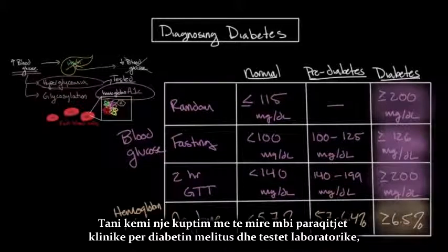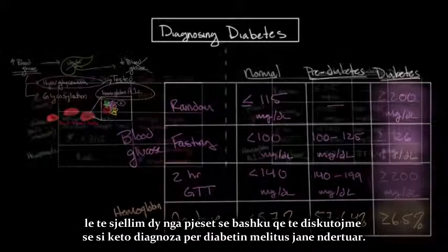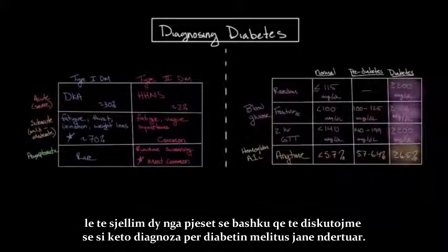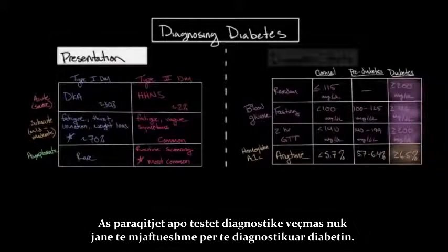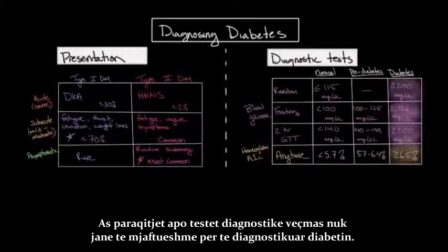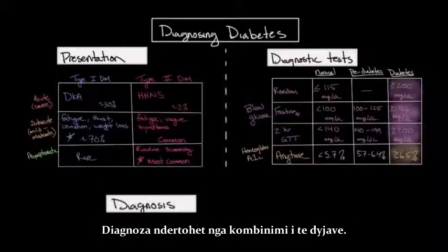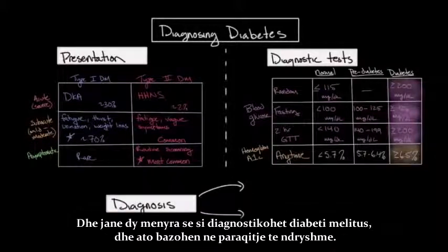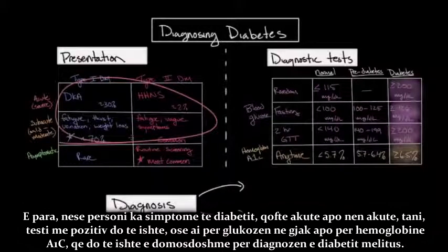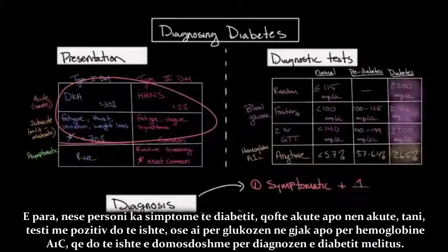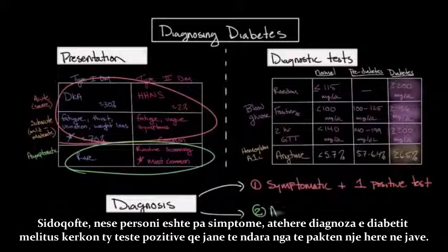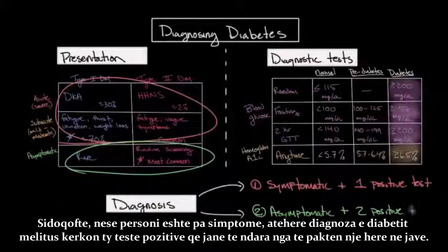Now let's bring together the clinical presentation and laboratory tests to discuss how the diagnosis of diabetes mellitus is made. Neither the presentation nor the diagnostic test alone is sufficient — the diagnosis requires a combination of both. If an individual has symptoms of diabetes, whether acute or subacute, then only one positive test (either blood glucose or hemoglobin A1c) is necessary. However, if the individual is asymptomatic, then a diagnosis requires two positive tests separated by at least one week of time.